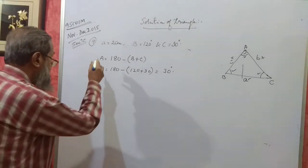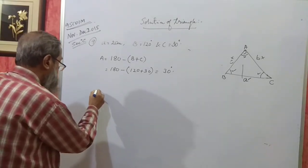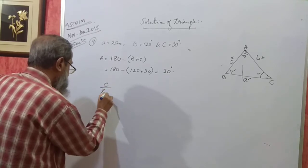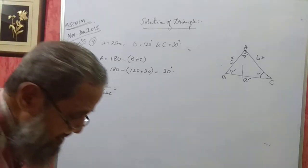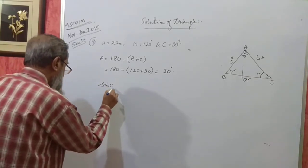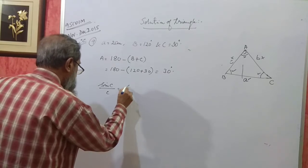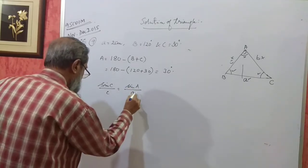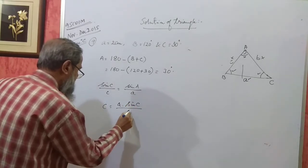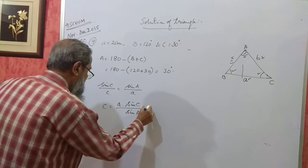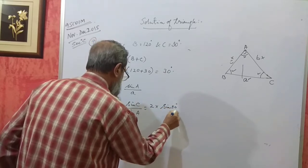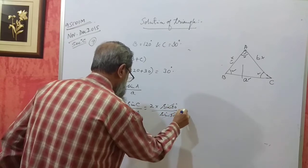That means angle A is also 30 degrees. Now we can use the sine rule: C by sin C is equal to sin A by A. So C will be equal to A into sin C divided by sin A. That is 2 into sin 30 divided by sin 30, so C is also 2 centimeters.